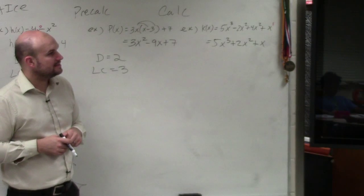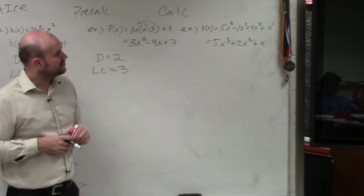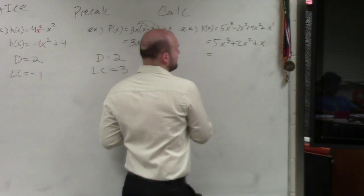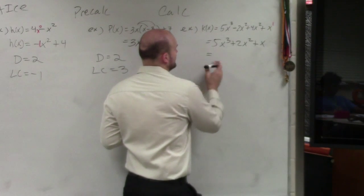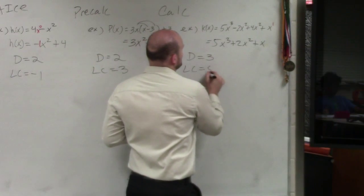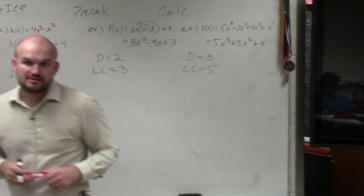So in this case, we have 5x³ plus 2x² plus x. So there you go. My degree is 3, and my leading coefficient is 5. Does everybody see that?